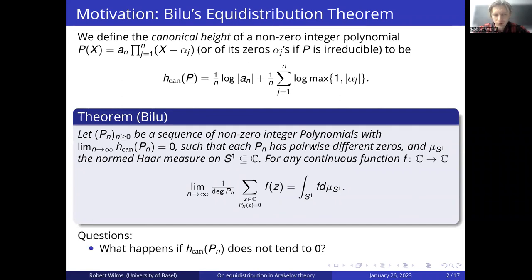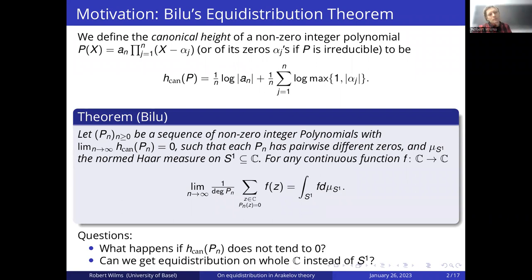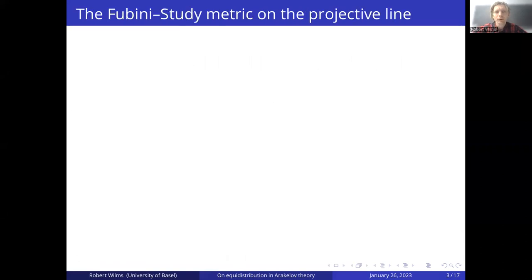We can now ask some questions. First, what happens if the canonical height is not tending to zero? And the other one: if we allow the height to not go to zero, can we reach something like equidistribution on the whole complex plane instead of only S^1, which would be interesting? But to do this, we need some measure on C which has finite volume.